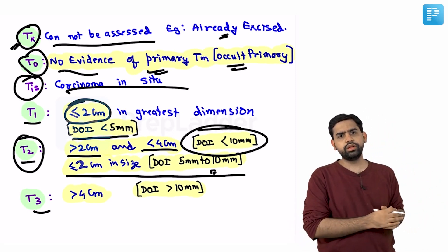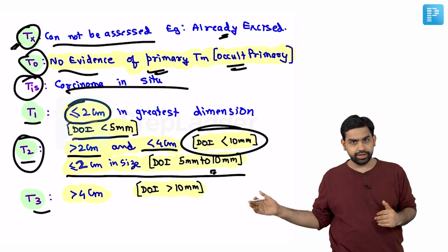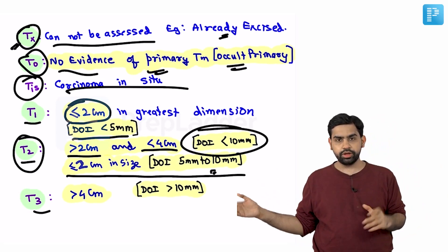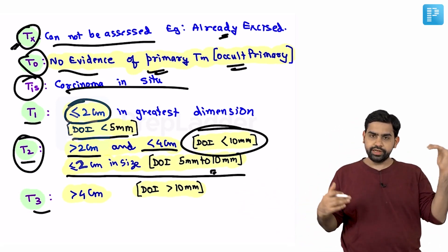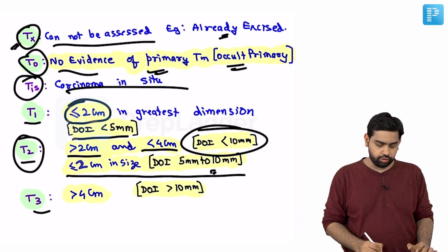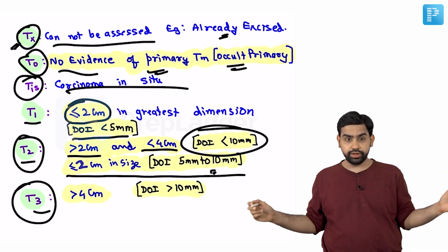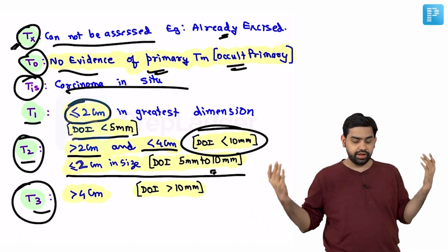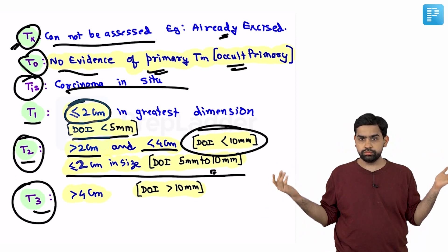T3 is straightforward: if the size of the tumour is more than four centimetres in the maximum dimension, or the depth of invasion is more than 10 millimetres, then we call it T3.